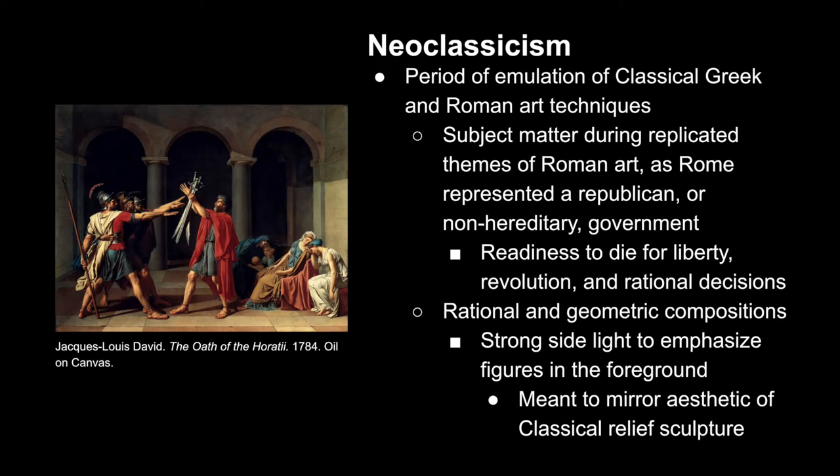The first period we're going to talk about is Neoclassicism. As its name suggests, it's basically the new classical — artists are striving to emulate classical Greek and Roman techniques, in addition to their themes and subject matter. This was done primarily because Rome was a symbol of republican or non-hereditary government, which, in light of all of these revolutions, was very relatable at the time.